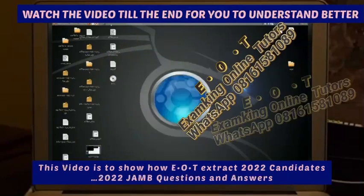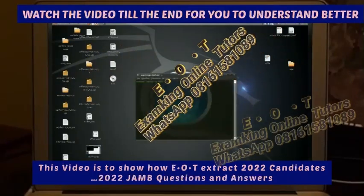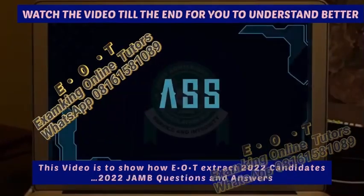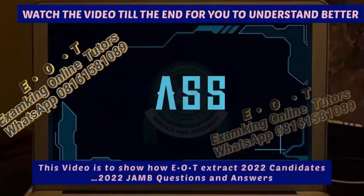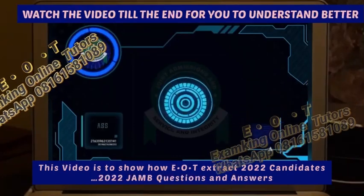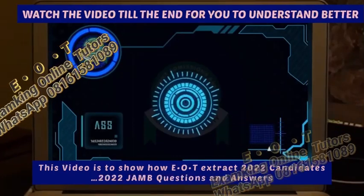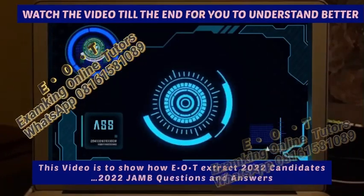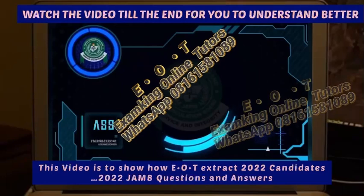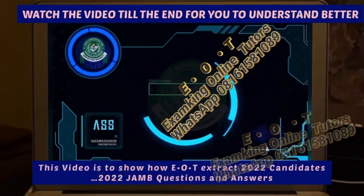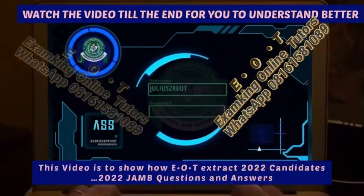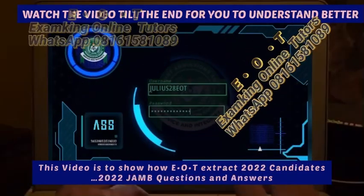This is the software we use to extract our subscribers' JAMB question and answer in 2022 — the ASA software. As you can see, we now have to input our details into the software.